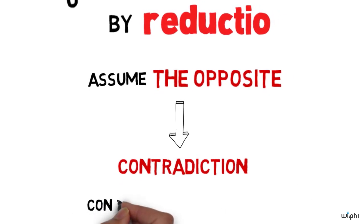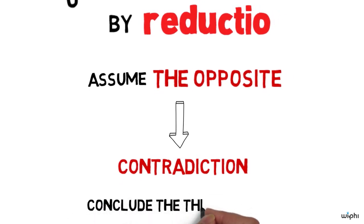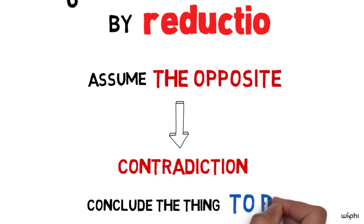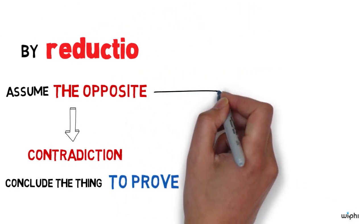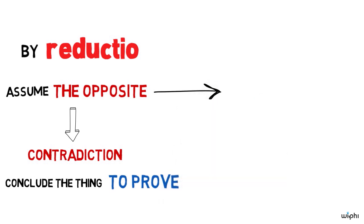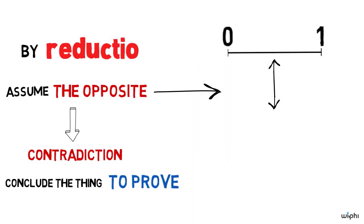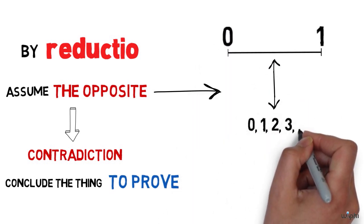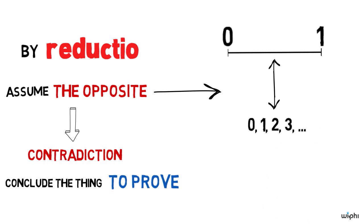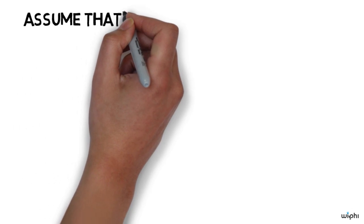Because the opposite entails a contradiction, it can't be true. So the thing we wanted to prove must be true. What's the opposite of what we wanted to prove? It's the idea that the real numbers between 0 and 1 are in 1-1 correspondence with the natural numbers — meaning we can assign a different natural number to each real number between 0 and 1. So assume that's true.